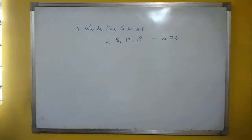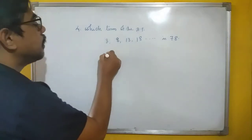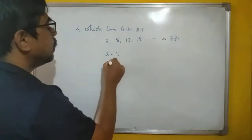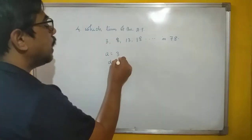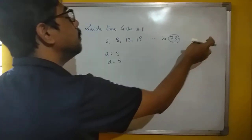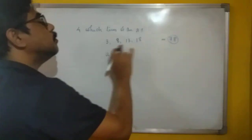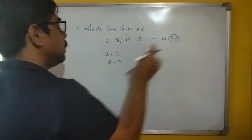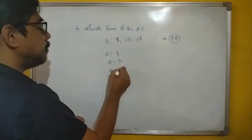That means what? Here A is 3, D is 8 minus 3 is 5, and 78 is the last term. But which term is 78, in which number? So the A and last term is 78.